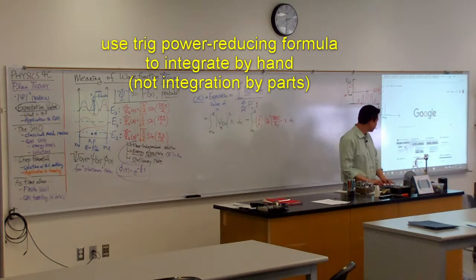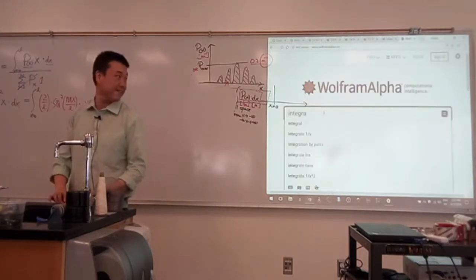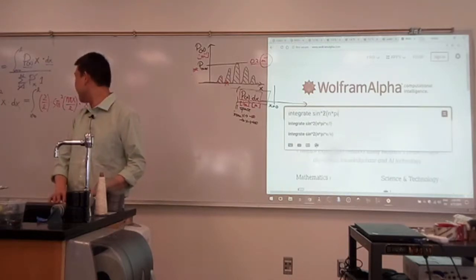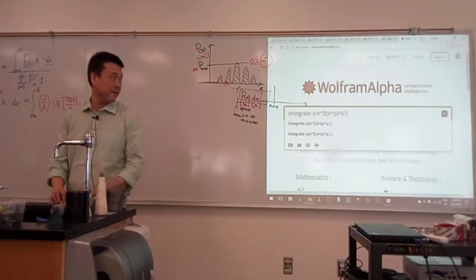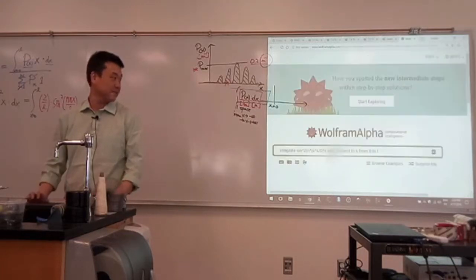So what I want to do is I want to integrate sine squared n times pi times x over L times x with respect to x from 0 to L. All right.